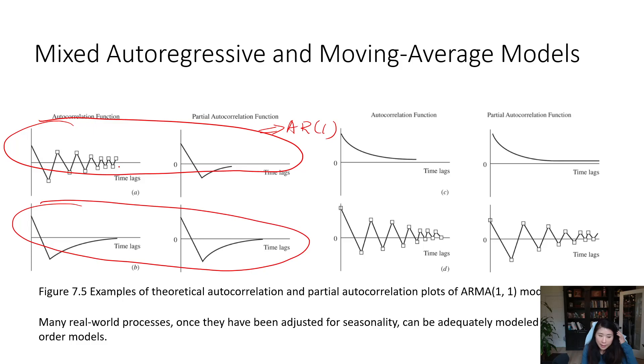Now we look at diagram 2. In the ACF diagram we see one spike, and we also see one spike in the PACF diagram. Therefore, in this time series we should use AR1 and MA1. Usually we don't write this way, AR1 or MA1; we just write ARMA(1,1).